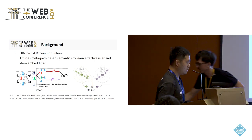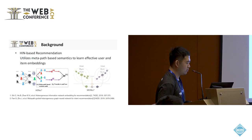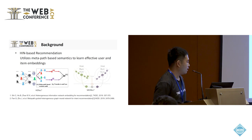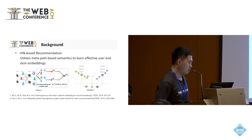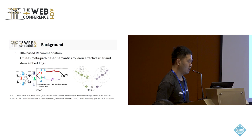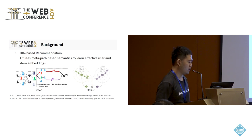HIN has been widely used to perform recommendations. It utilizes metapath-based semantics to learn effective user and item embeddings. As typical methods for HIN-based recommendation, HIRANK performs metapath-based random walk to integrate semantics into user-item interaction modeling, and MIRANK proposes metapath-based aggregations to use different semantics, achieving remarkable results.